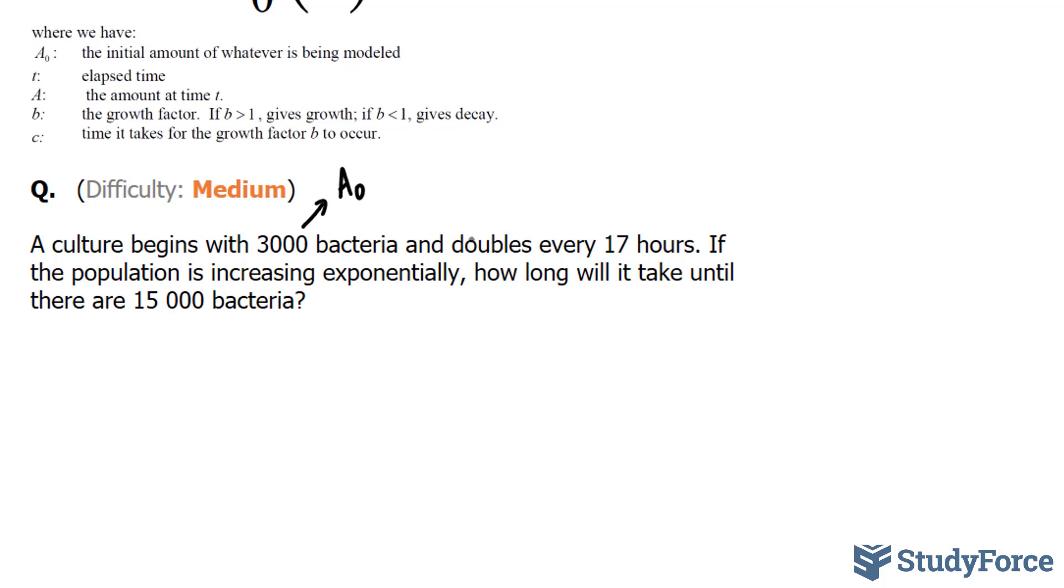And it doubles every 17 hours. It doubles - this will represent our b value, where b represents the growth factor, every 17 hours. And remember, c tells us the time it takes for the growth factor to occur. So this is our c.